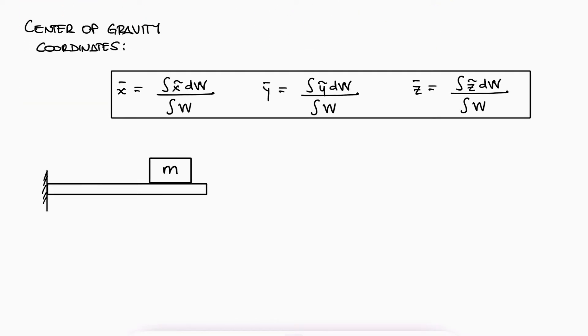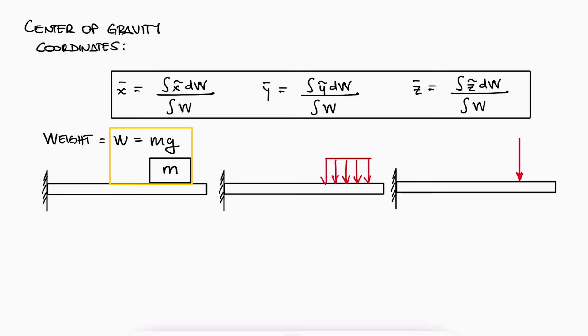Just like it was pointed out during the shear and moment diagrams video, a body of weight W can be substituted by a point load, and the location of that point will be its center of gravity.